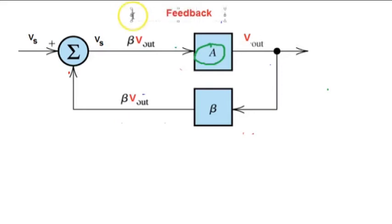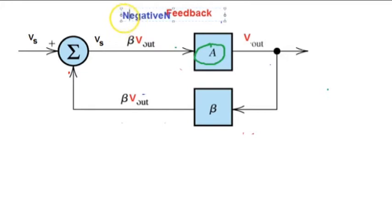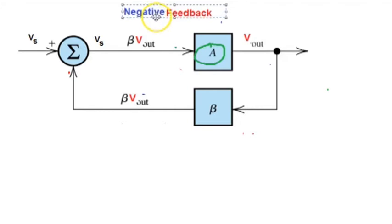This is the circuit for negative feedback. In negative feedback, the output signal gets through the beta network and becomes a feedback signal. That feedback signal gets subtracted from the incoming VS signal, and then it becomes the negative feedback. There is a long list of applications of negative feedback as compared to positive feedback.